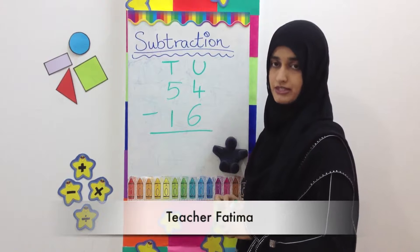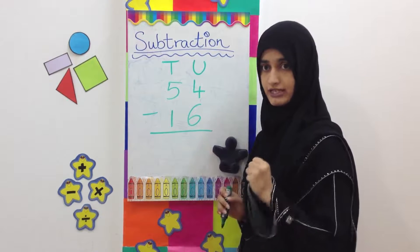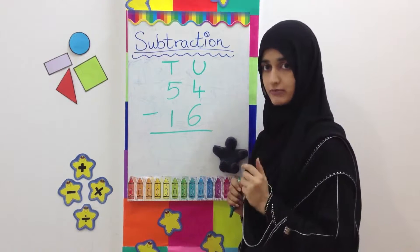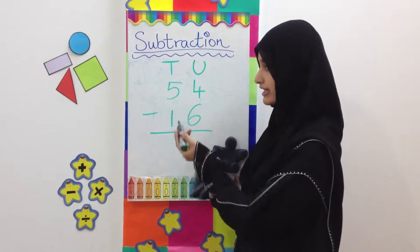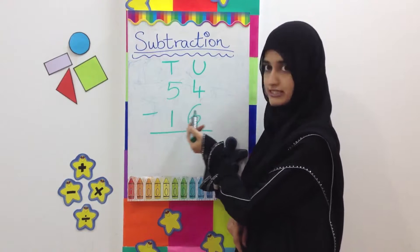Sometimes in subtraction, what happens is that the number we have to subtract has more units than the number from which we are subtracting. Like if you see the example here, 54 minus 16.